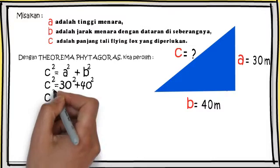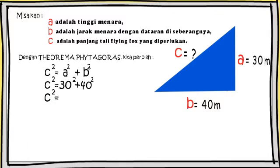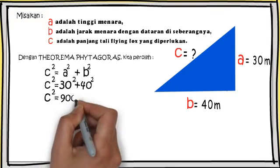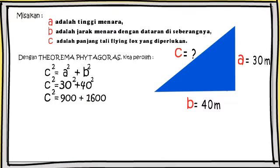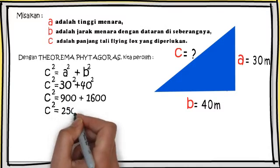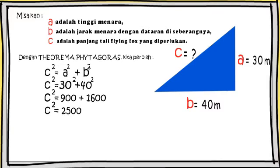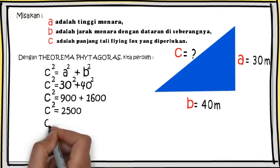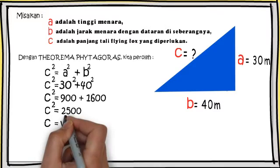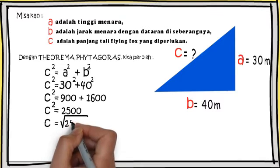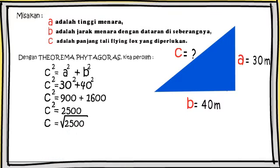Kita kuadratkan angka-angka ini dan kita peroleh 900 plus 1600. Dari sini kita jumlahkan dan kita peroleh 2500. C sama dengan akar 2500. Akar dari 2500 ini kita peroleh 50.